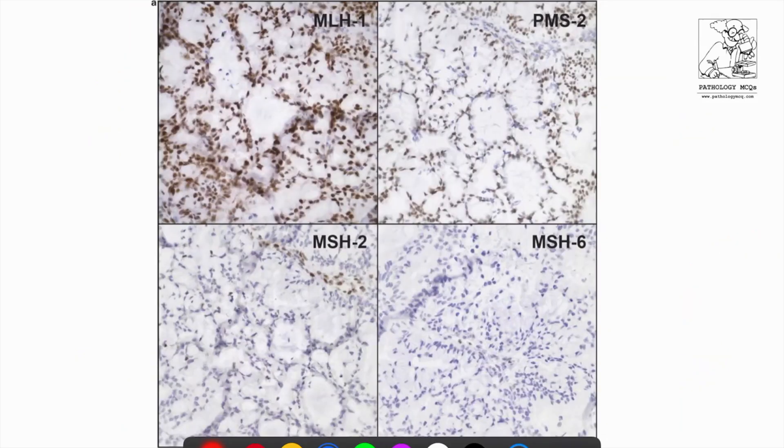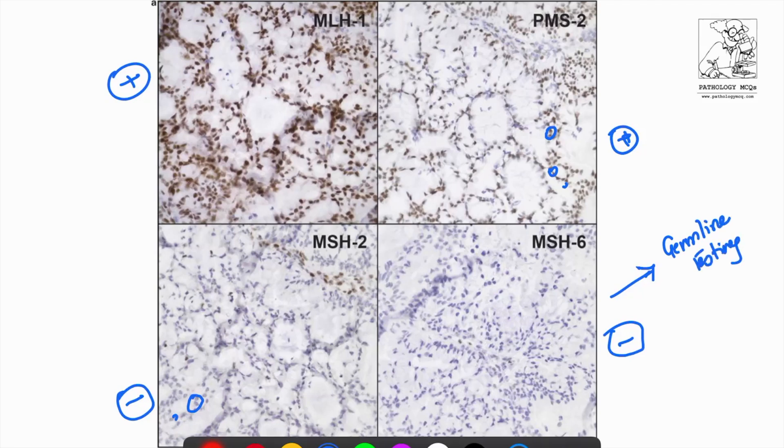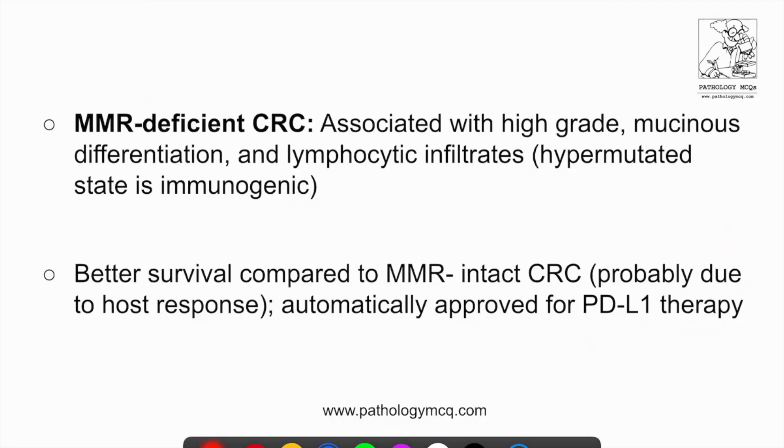There's another case here where you can see MLH1 is intact. MSH2 is also intact. You can see this in the tumor cells. MSH2, however, is lost. MSH2 is lost and MSH6 is lost. So what should be done in such cases? In such cases, what should be done next is germline testing for MMR. Germline testing for the MMR proteins, particularly MSH2 and MSH6 to see if they are lost. PCR is a good method to test.